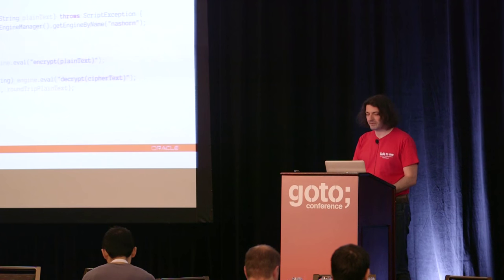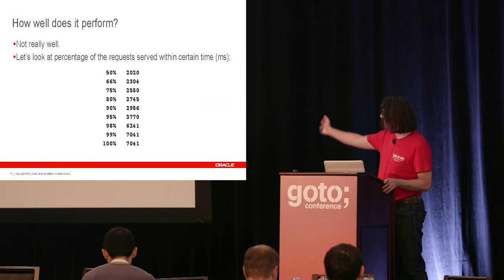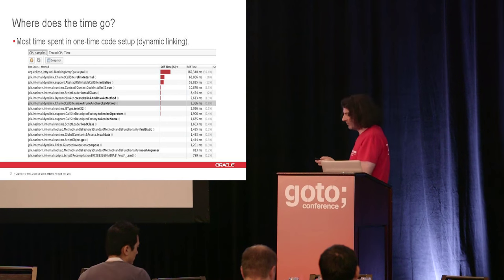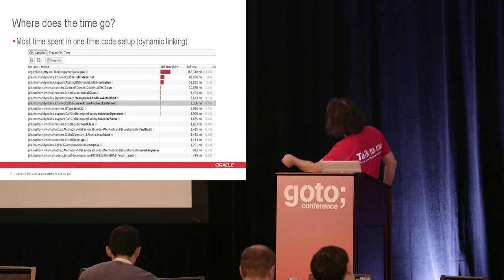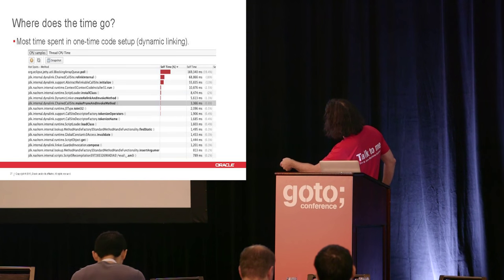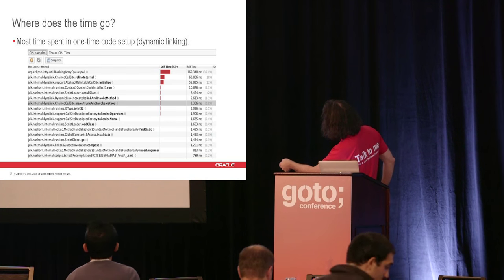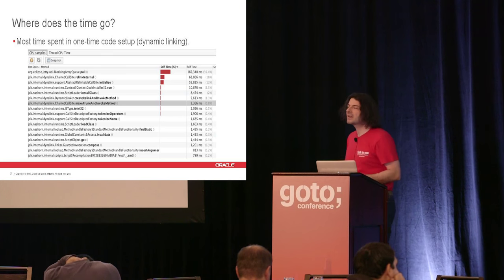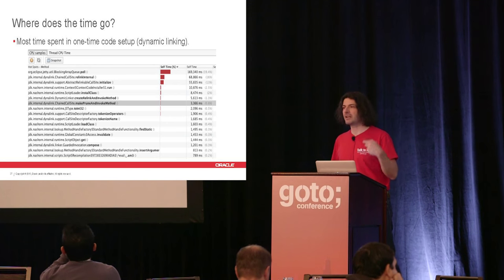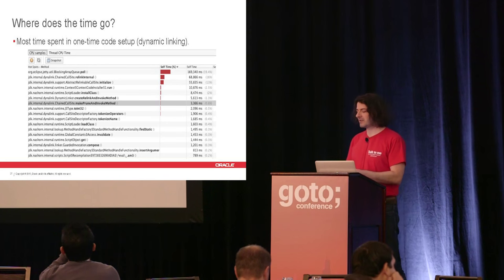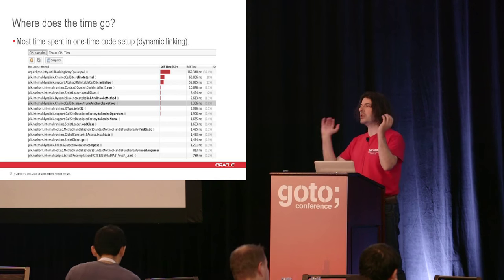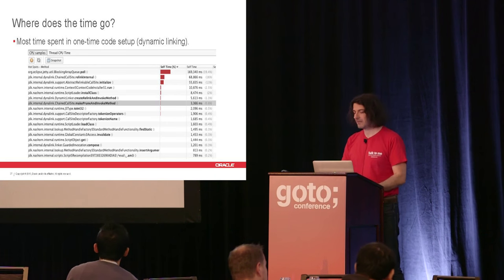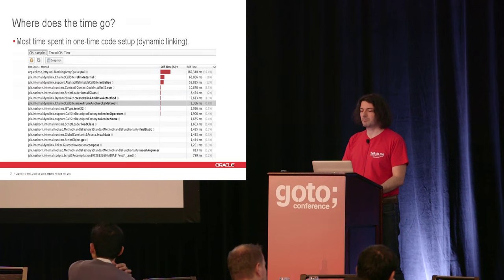What's happening here, if you try to visualize with JVisualVM, is that you have dynolink call site relink, call site initialize, code installer run, install class, create relink. Classes are being generated, bootstrapped, and linked each and every time — started from scratch — because you're creating a new engine. It doesn't know that there was a previous engine that already compiled this code. The code is loaded, parsed, compiled, linked every single time.